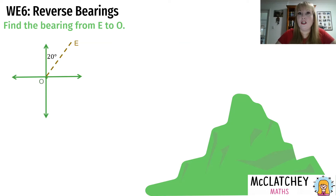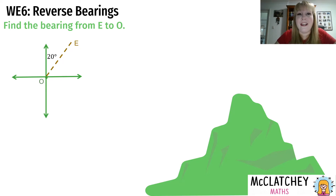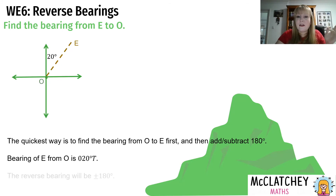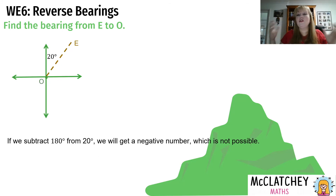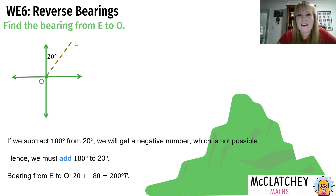Now a shortcut using reverse bearings: I need to find the bearing from E back to O, and I know the forward bearing from O is 20 degrees true. Rather than constructing a full geometric proof, I can just add or subtract 180 degrees. If I subtract 180 from 20 I get a negative number — impossible — so I add 180, giving a reverse bearing of 200 degrees true.